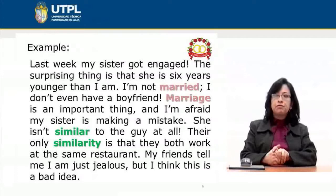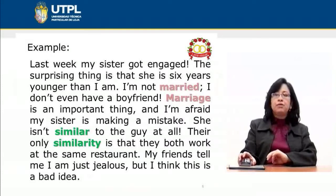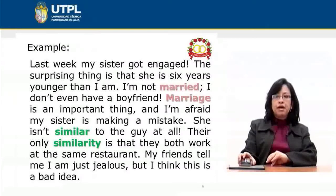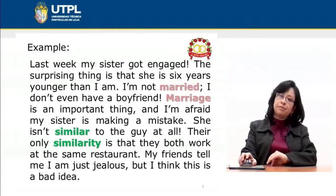Another example paragraph: 'Last week my sister got engaged. The surprising thing is that she is six years younger than I am. I am not married; I don't even have a boyfriend. Marriage is an important thing, and I am afraid my sister is making a mistake. She isn't similar to the guy at all — their only similarity is that they both work at the same restaurant. My friends tell me I am just jealous, but I think this is a bad idea.' Here we have 'married' and 'marriage,' and 'similar' and 'similarity' — related word forms that show the connection between the ideas.